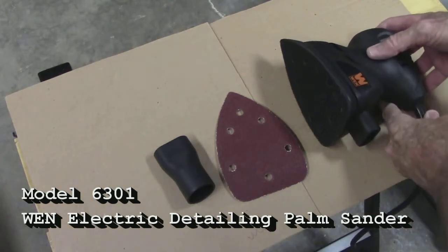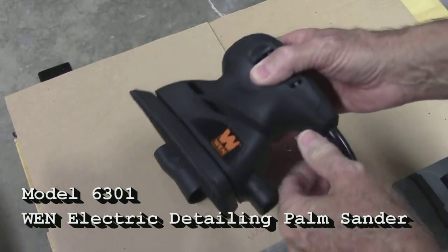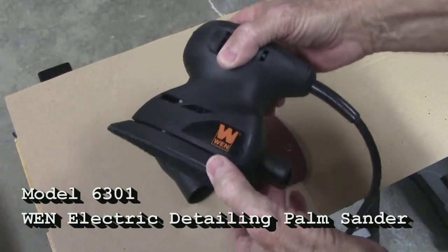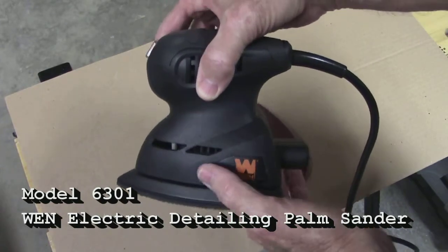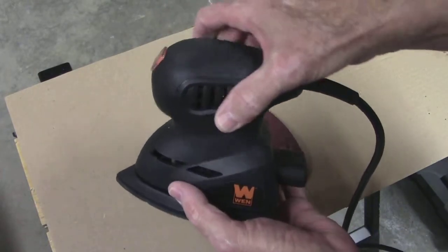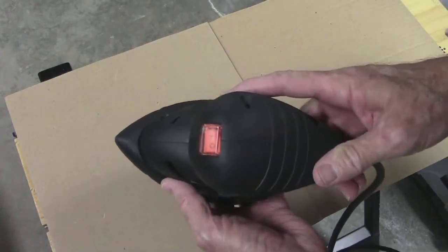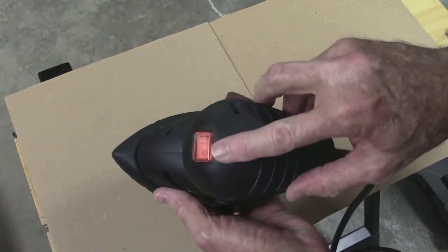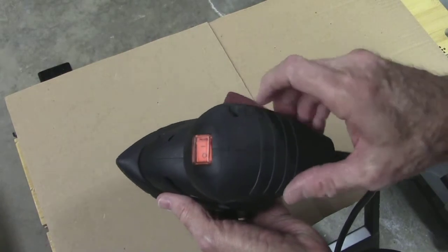This detailing sander feels lightweight and is listed by the manufacturer at only 2 pounds. There is a conveniently located on and off switch and the grip is comfortable.